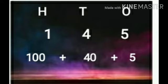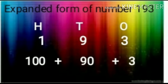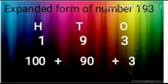Now we solve the next example: 193. In this number, the place value of 1 is 100, 9 is 90, and 3 is 1. So the expanded form of this number is 100 + 90 + 3. Okay students, clear? Very good.